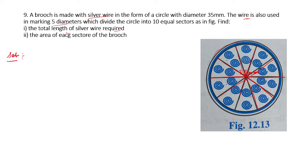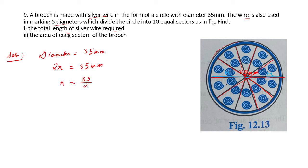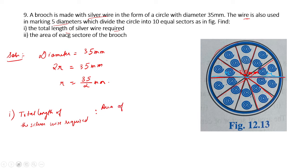For the solution: diameter = 35 mm, so radius = 35/2 mm. The total length of silver wire = circumference of the circle + length of 5 diameters = 2πr + 5 × 35. Using pi = 22/7: circumference = 2 × (22/7) × (35/2) = 110 mm. Five diameters = 5 × 35 = 175 mm. Total = 110 + 175 = 285 mm.